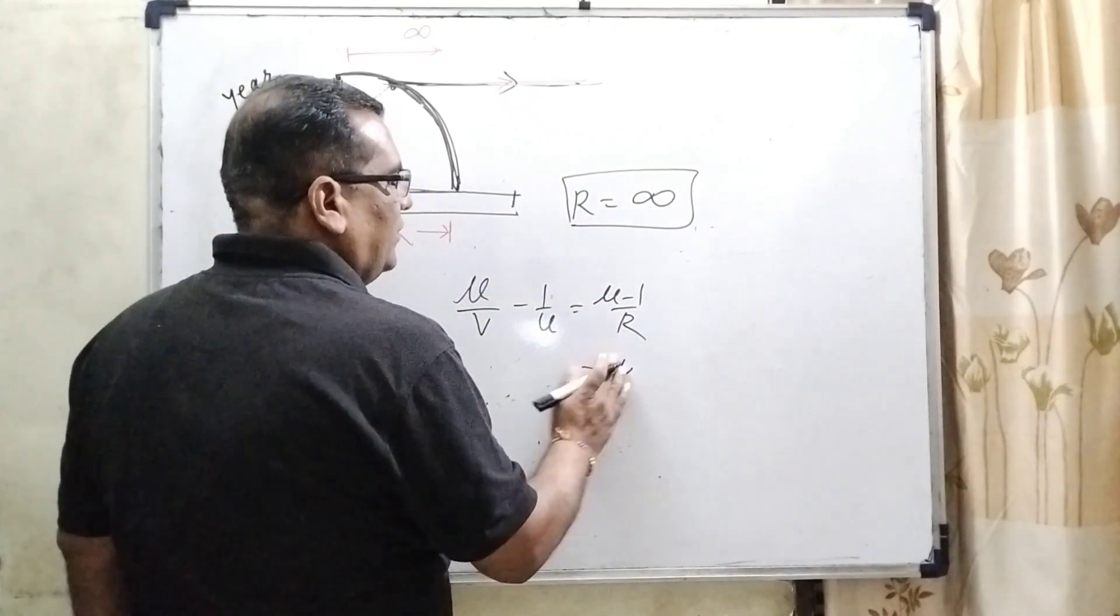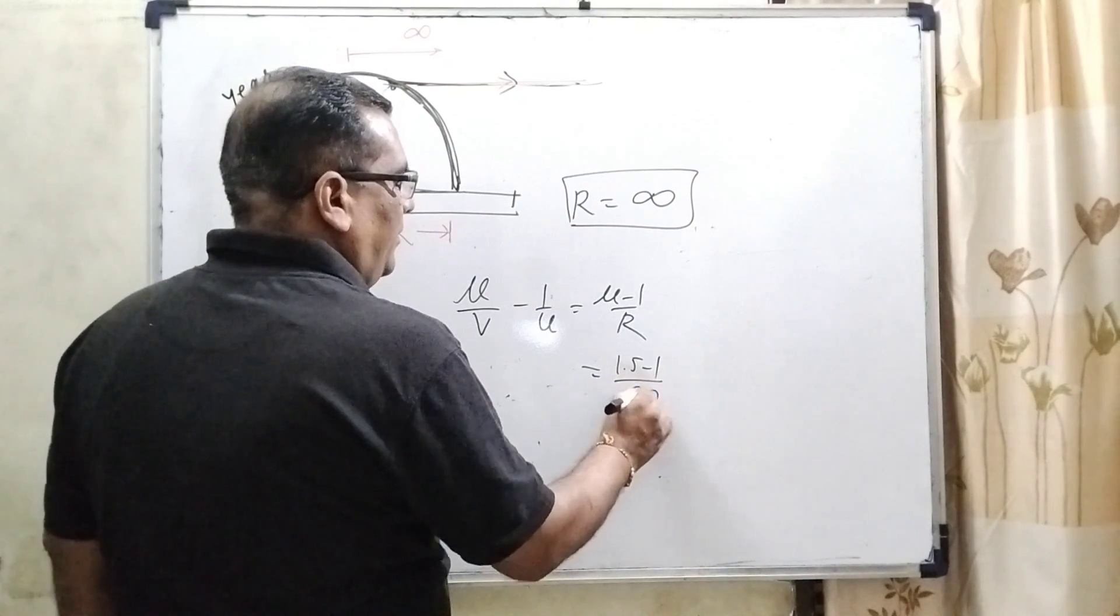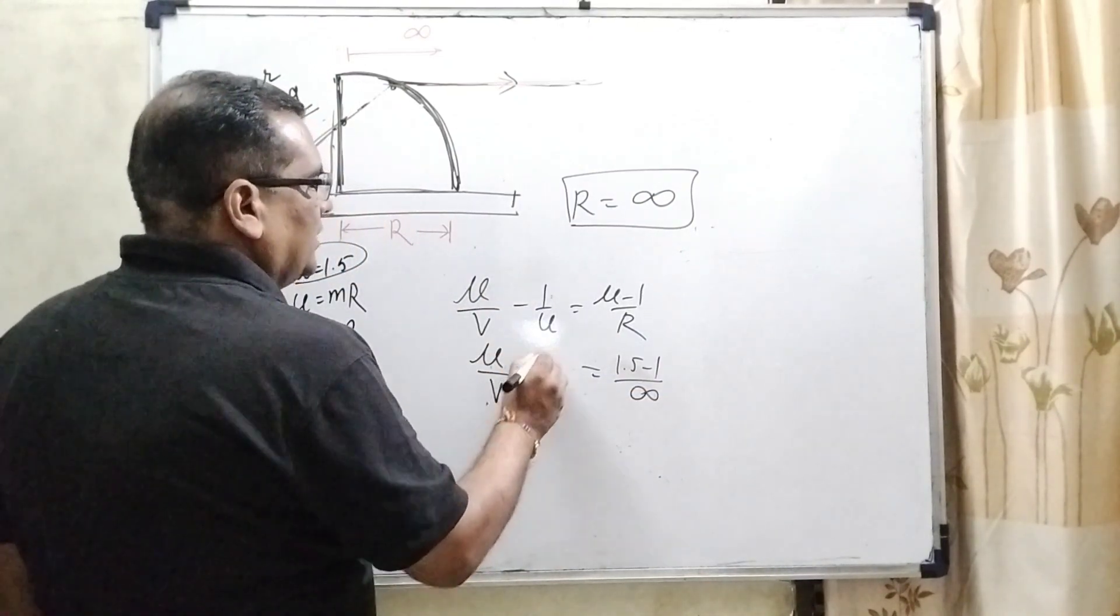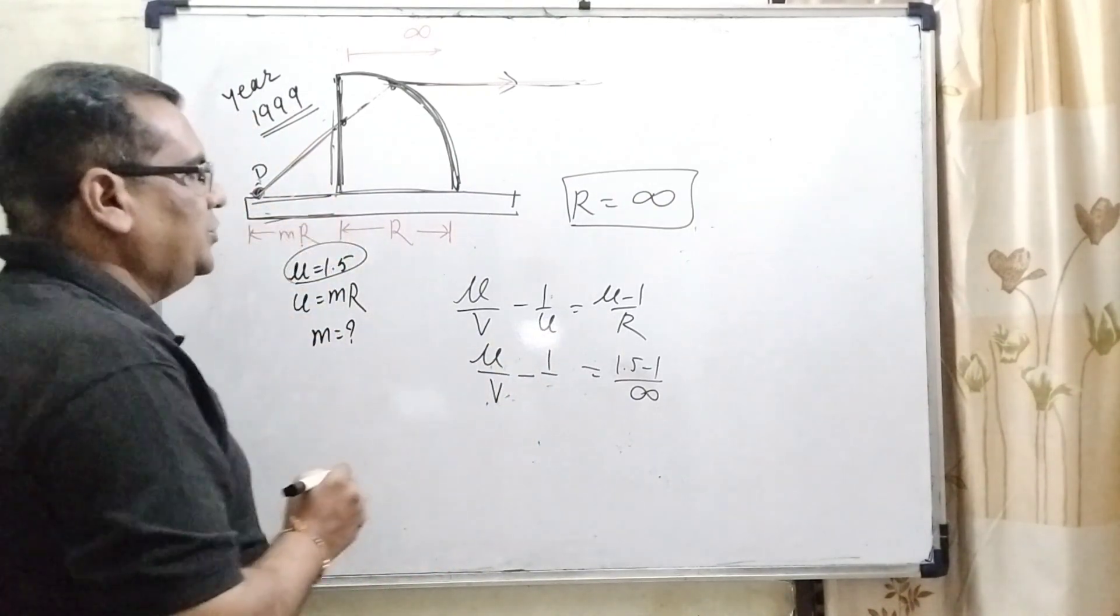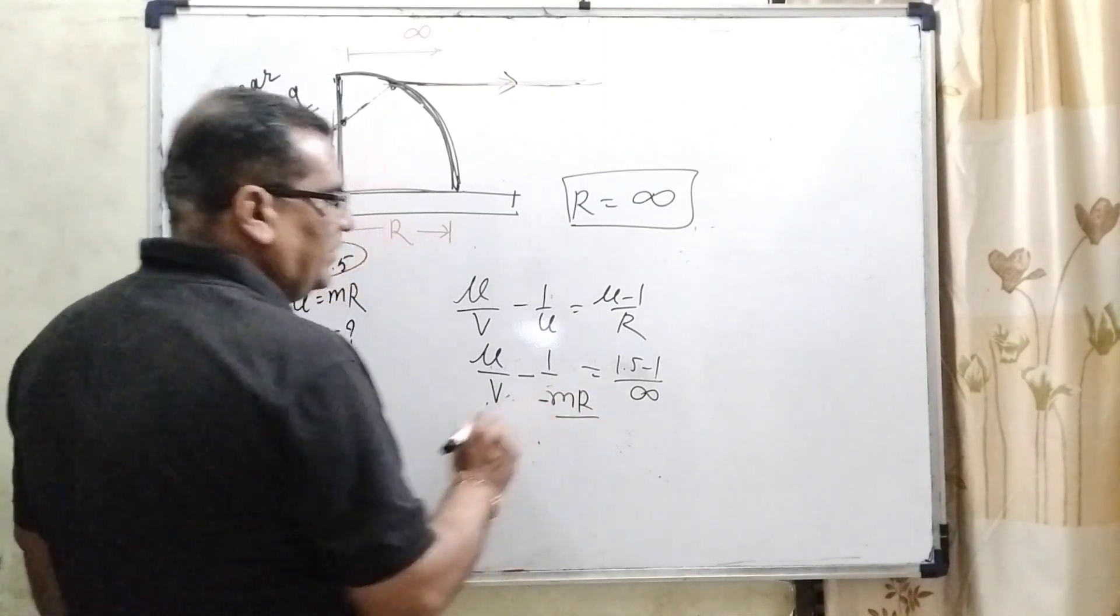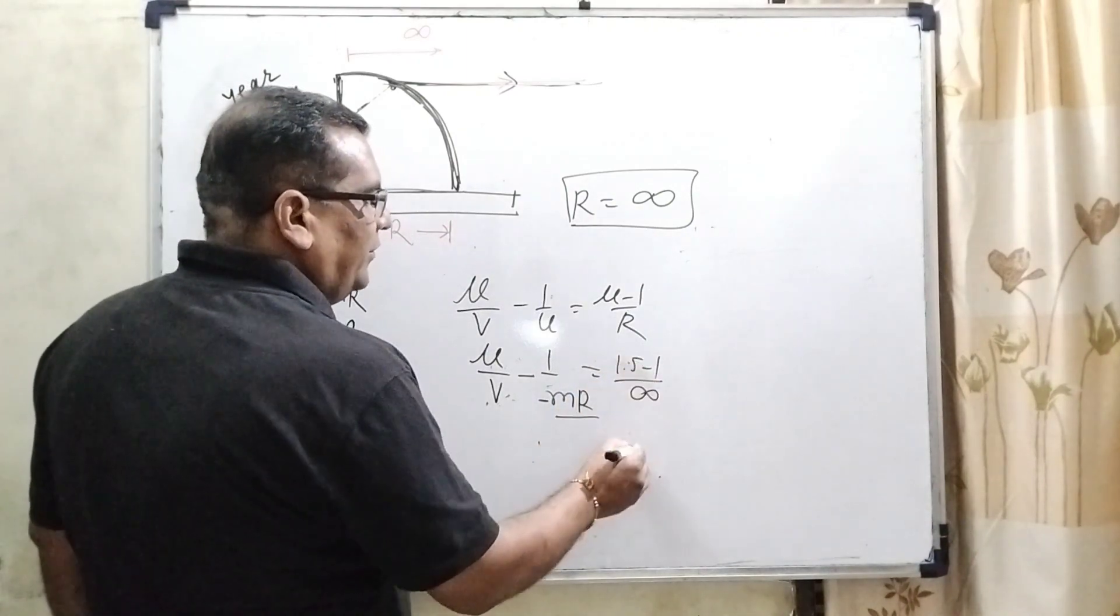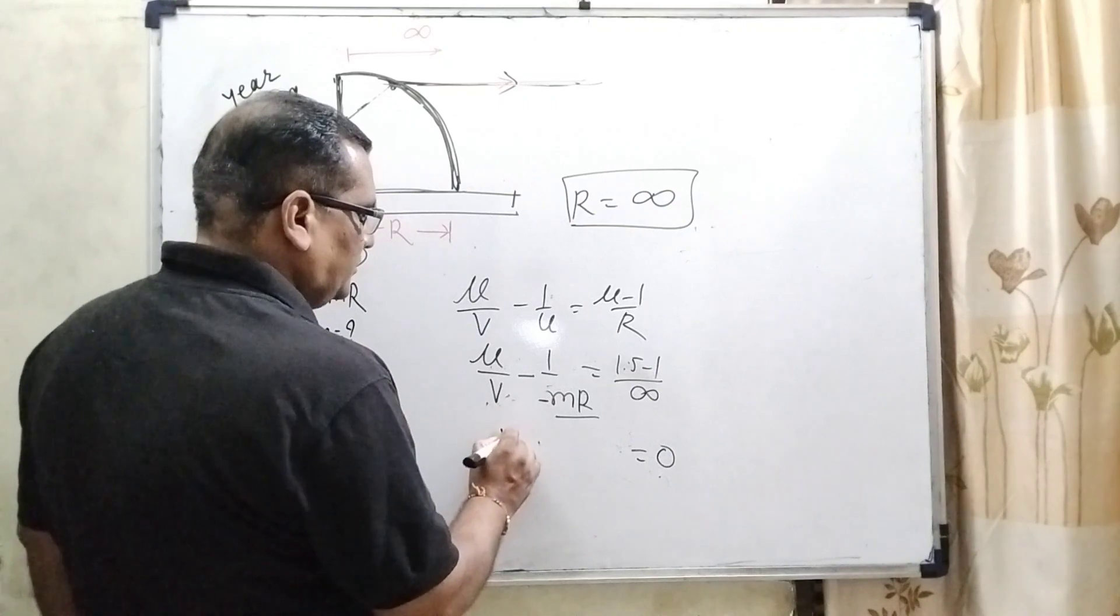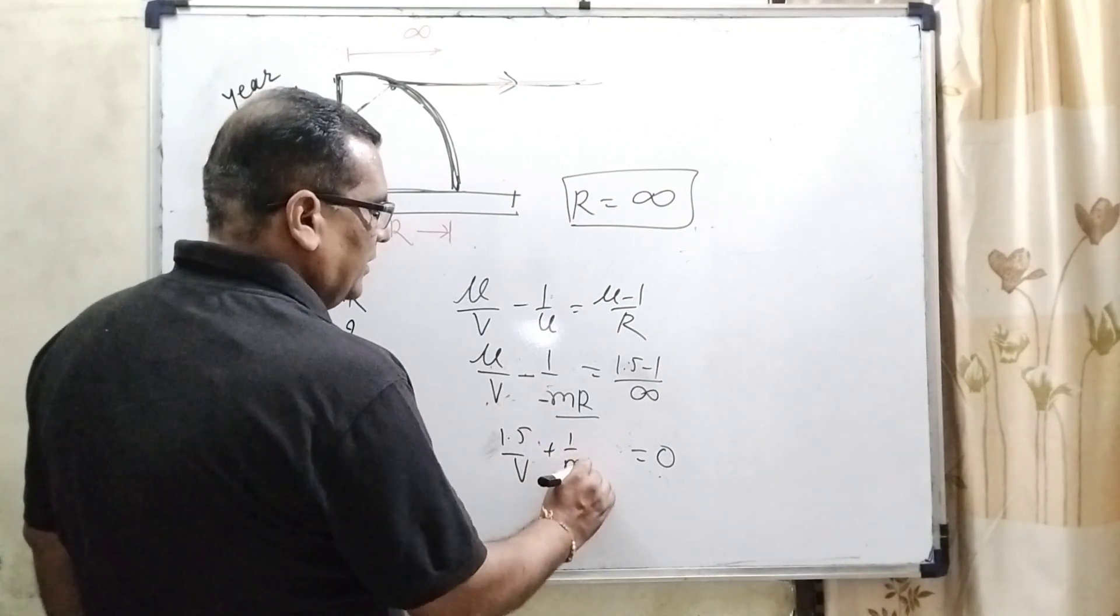So now substitute this value. What is the value of mu? That is 1.5 minus 1 upon infinity. Here mu by v minus, here what is the value of u? Here u is given that is small m into capital R, but it is negative by using sign convention rule. So something upon infinity becomes 0. Mu means 1.5 upon v minus minus plus 1 upon mR.